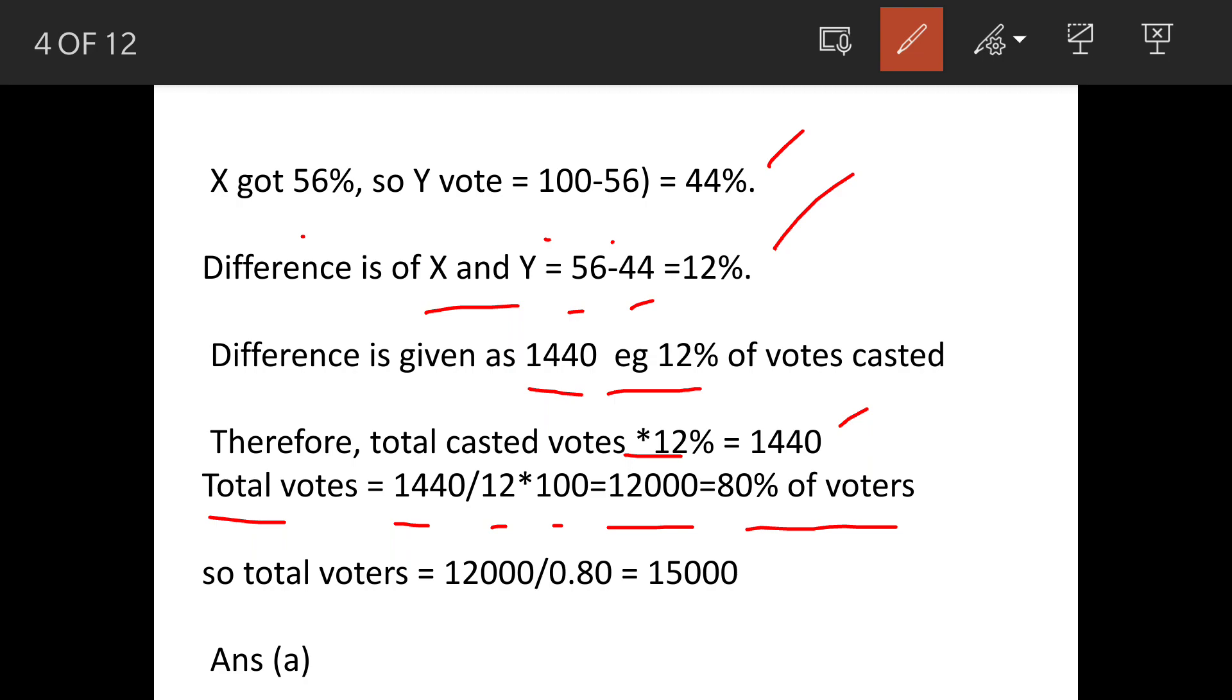So the total number of voters will be 12,000 divided by 0.8, which equals 15,000. Our answer is option A. Thank you.